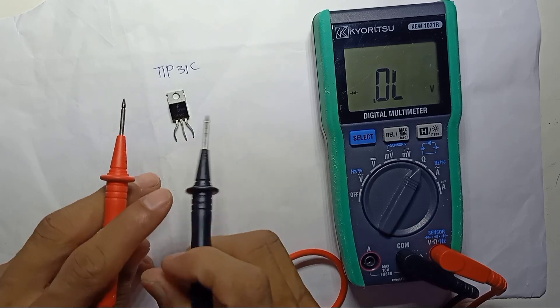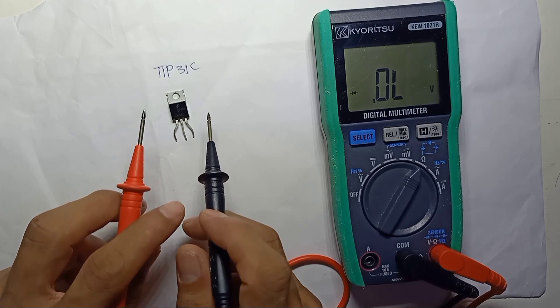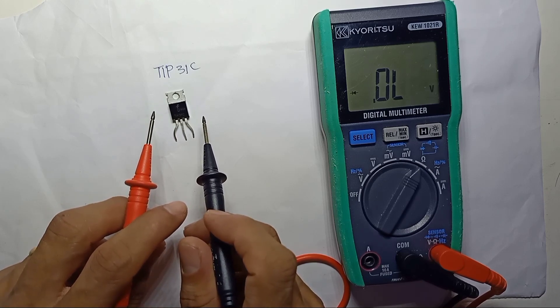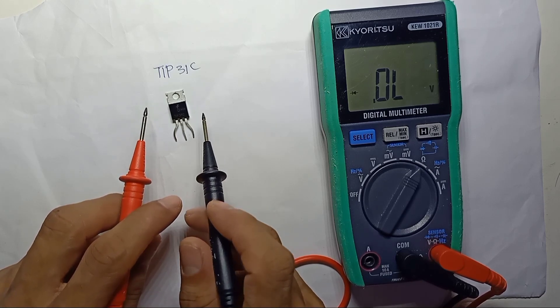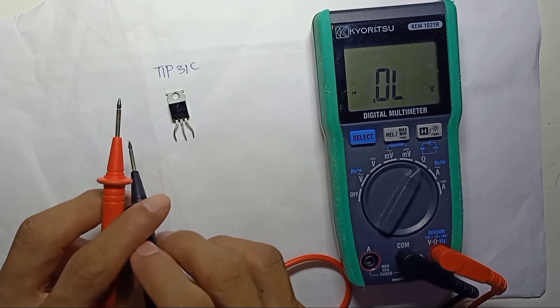So we want to check if this transistor is either NPN or PNP. If NPN, N will be 2 and P will be 1. So that means NPN.